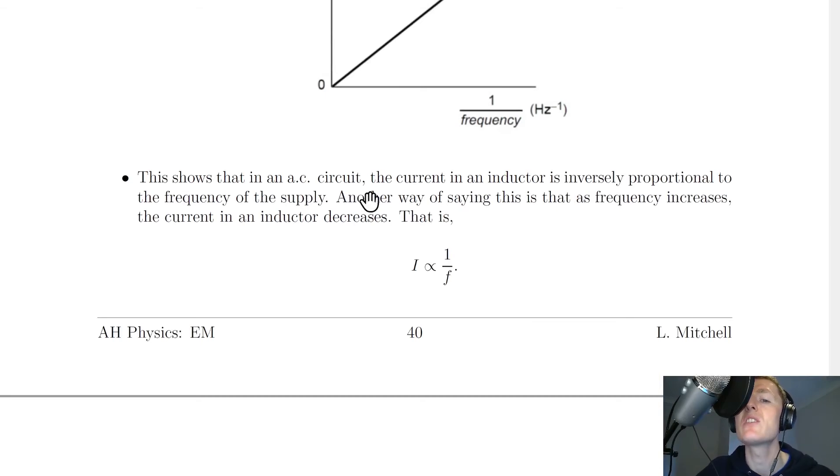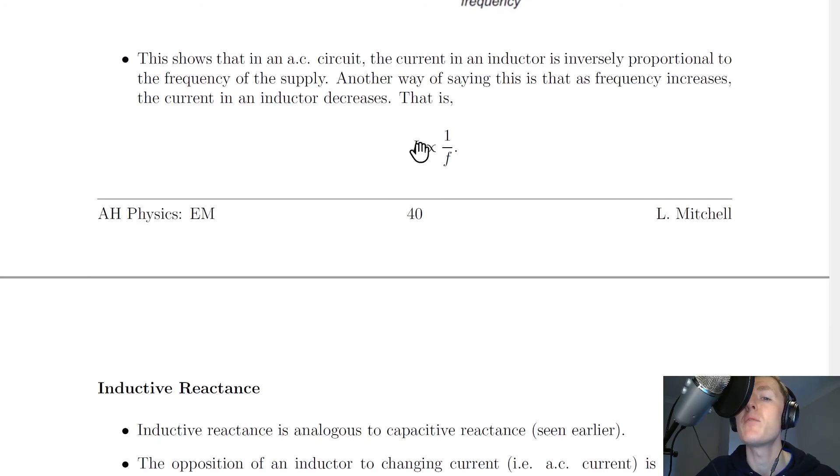This shows that in an AC circuit, the current in an inductor is inversely proportional to the frequency of the supply, or the current is directly proportional to 1 over the frequency. Another way of saying this is that as frequency increases, the current in an inductor decreases. That is, in symbol form, I is proportional to 1 over F. And this relationship in terms of current and frequency will come in handy when we look at inductive reactance.